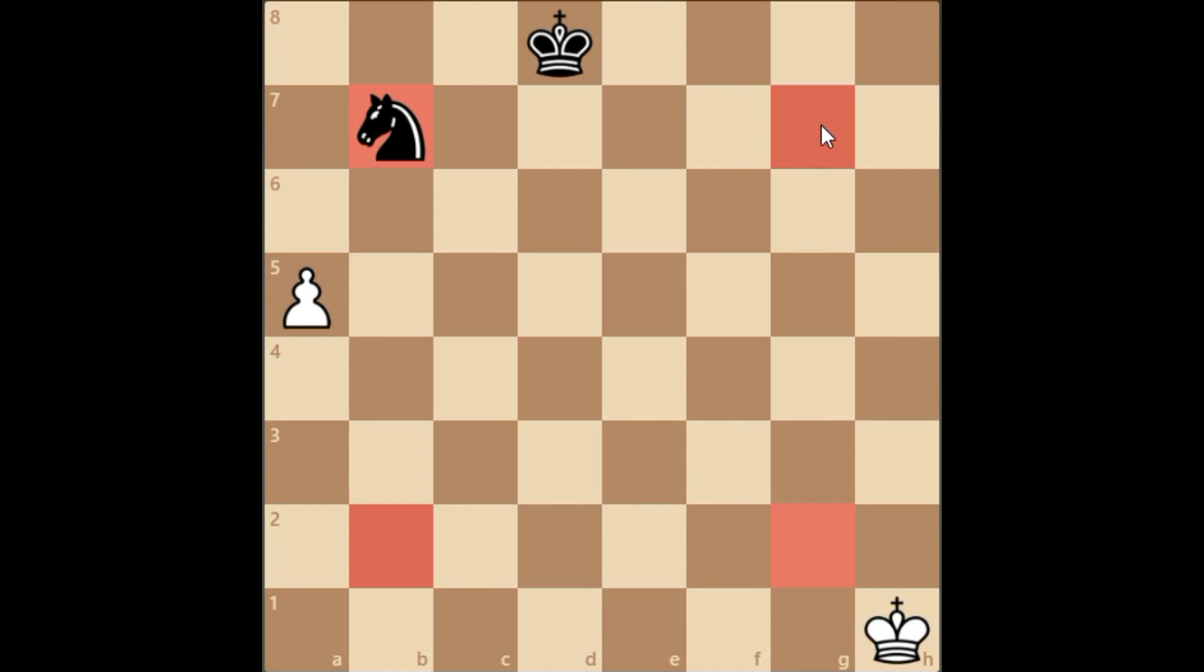Four squares are b7, b2, g2, and g7. These highlighted squares are called the knight's dumb square because the knight cannot do much from these squares, especially defending pawns.